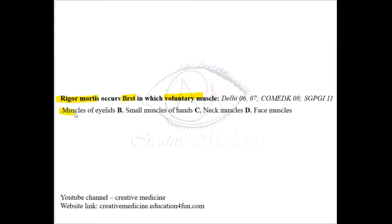Rigor mortis first appears voluntarily in the muscles of the eyelid. But if you were asked what is the first scene, rigor mortis is first seen in involuntary muscles, i.e., in the myocardium, by 1 hour.